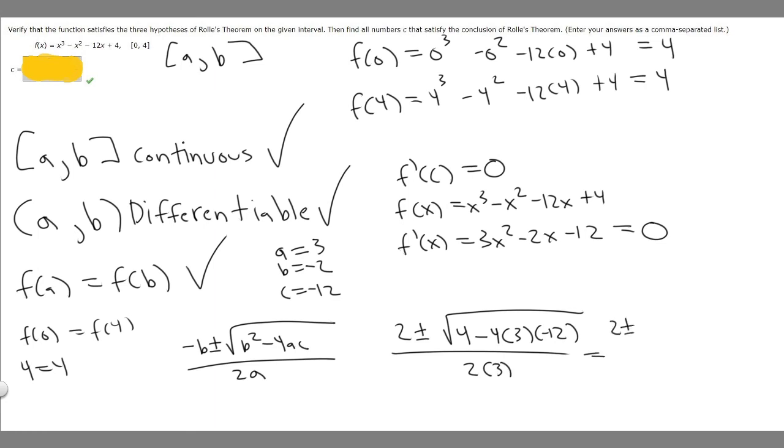Let's simplify this. We have 2 ± √(4 - 4(3)(-12))/6. If we solve that, we get 4 - 4(3)(-12). You should get 148. On the bottom, we have 2(3) = 6.